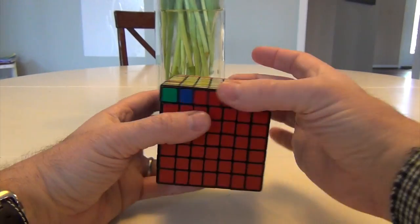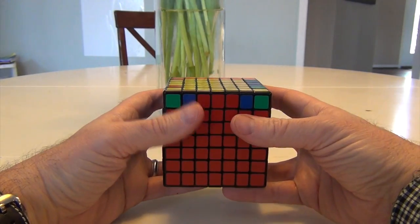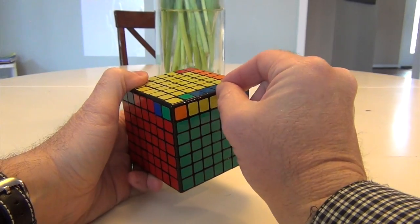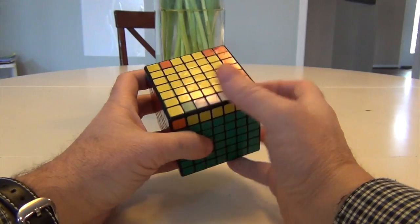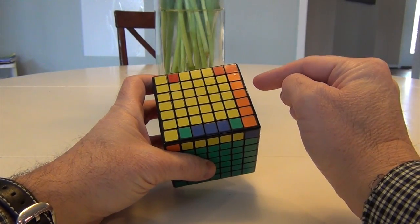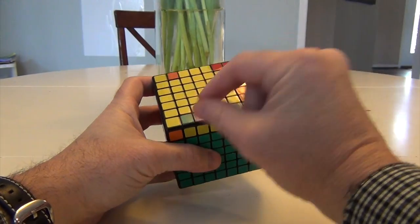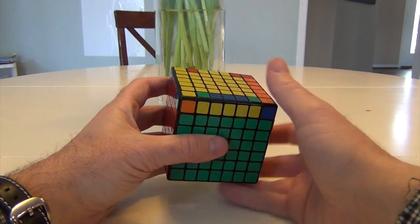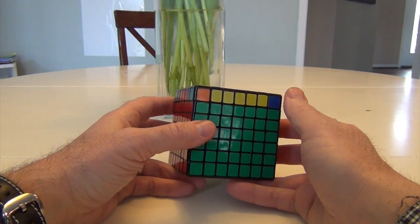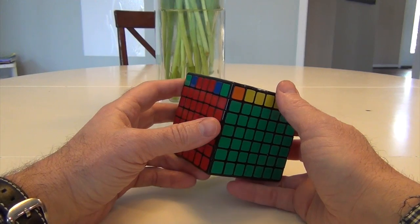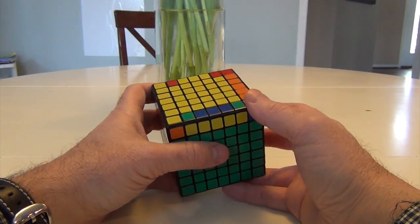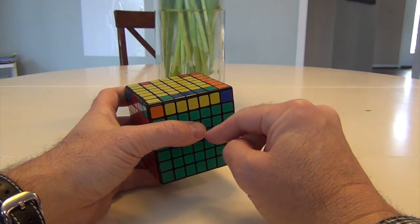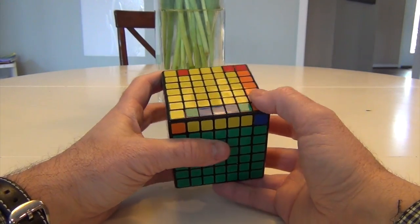The first thing that I would do with the last layer, if you're going to do a layer-by-layer solve, is start out by getting, go from the inside and work on the outside. So what you want to do first is you want to get all the edges rotated, oriented correctly.